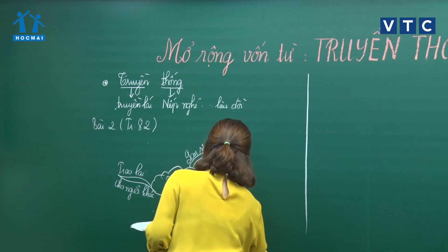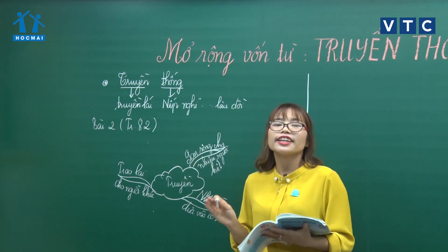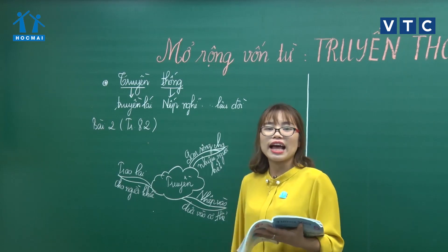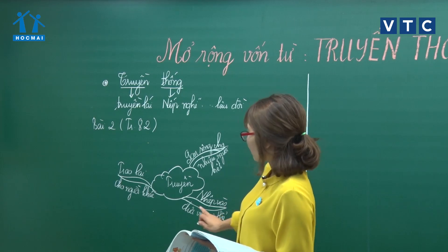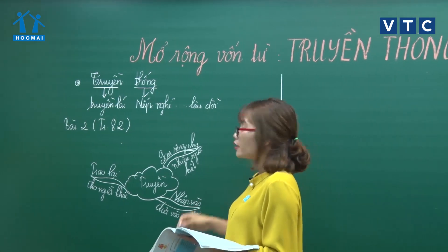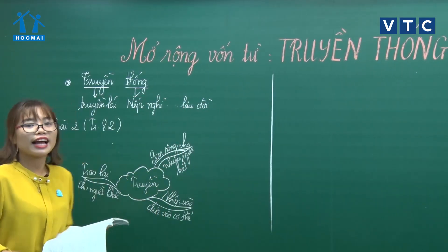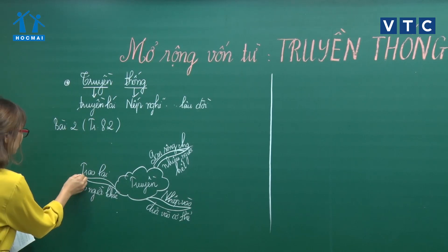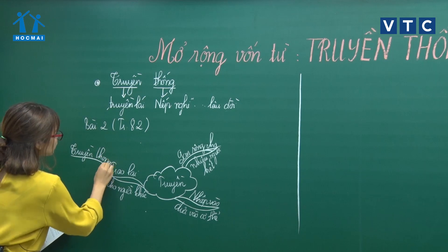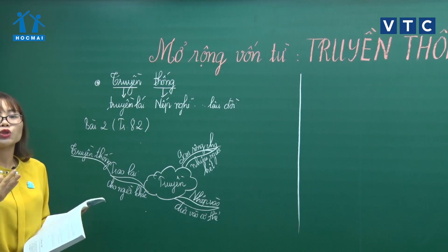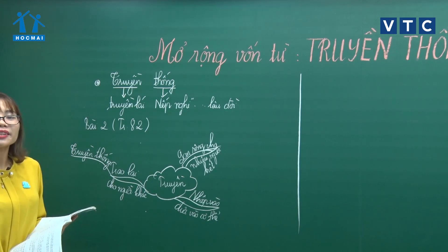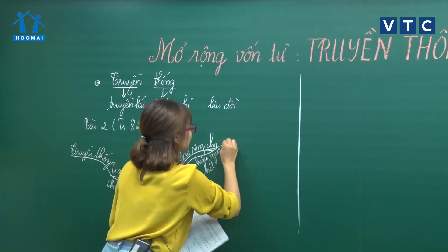Sau khi đã xác định từ truyền có 3 nghĩa, mình sẽ lần lượt sắp xếp các từ vào từng nhóm thích hợp. Từ đầu tiên là truyền thống - truyền từ đời này qua đời khác, nằm ở nhánh đầu tiên: trao lại cho người khác. Thứ 2 là truyền bá - làm cho người này, người kia biết, truyền bá được càng nhiều càng tốt, nằm ở nhánh lan rộng cho nhiều người biết.